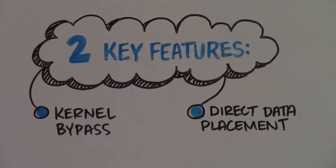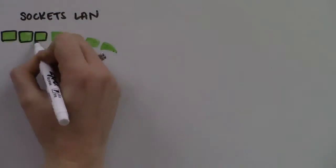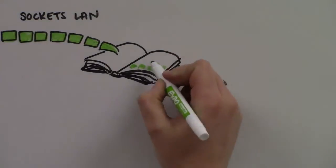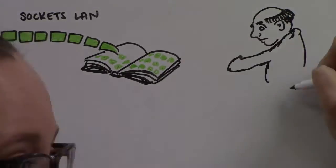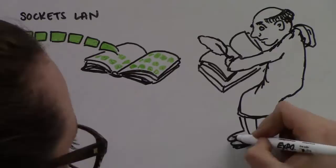The second key reason for iWARP's networking efficiency is a feature called direct data placement. With traditional sockets Ethernet, the host processor doesn't know where the application resides that wants to consume an incoming packet. So it creates a queue in kernel space.